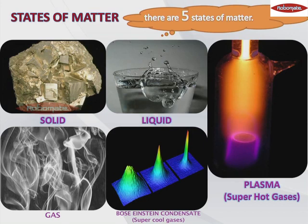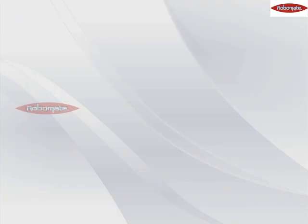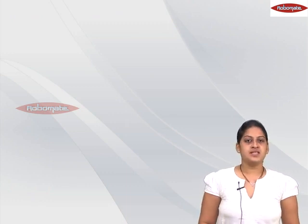We are not going to talk about plasma and Bose-Einstein condensate. But for your information, you should remember that from now onwards there are five states of matter, which includes solids, liquids, gases, plasma, and Bose-Einstein condensate. So let us start in detail about solids.